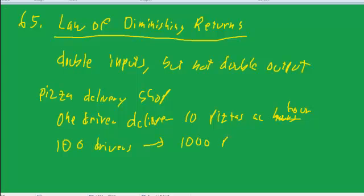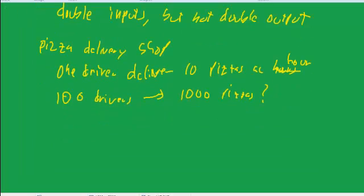deliver 10 pizzas an hour. However, does that mean that if we had 100 drivers we could get 1,000 pizzas delivered in an hour? No, probably not. We don't have the oven capacity to bake 1,000 pizzas in an hour, and even if we did, think of how big an area these 100 drivers would have to cover. They'd be getting in each other's way as they come back to pick up pizzas.